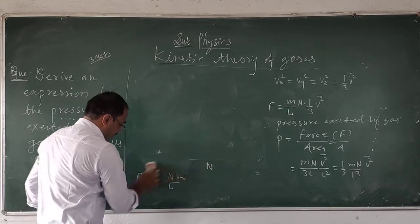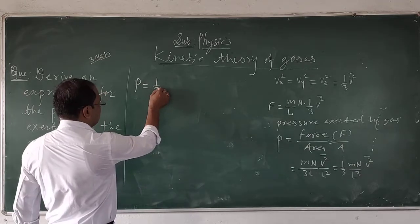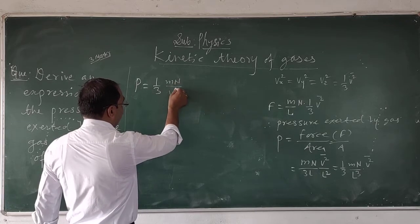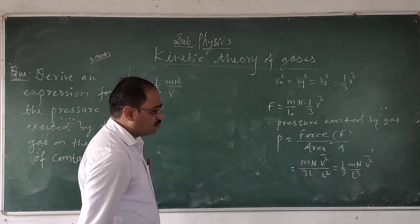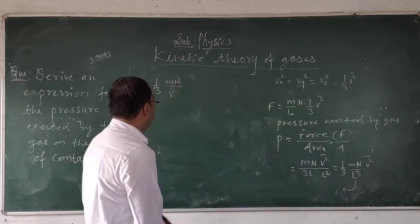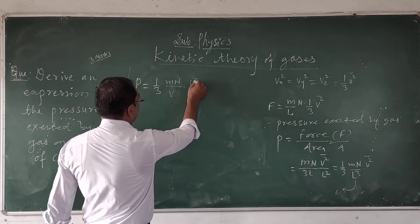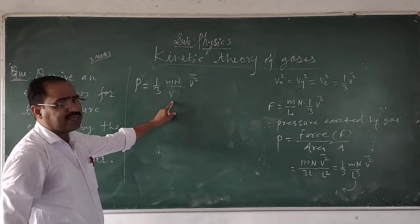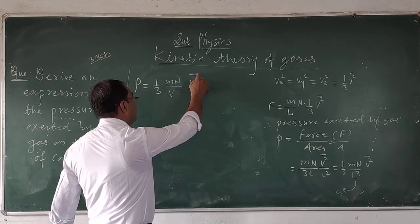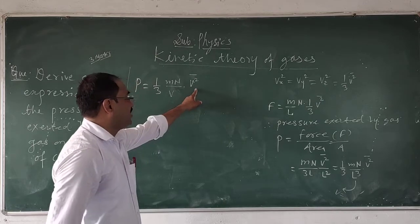Therefore the pressure is given by: P is equal to — since L equals V and L cubed equals V — the expression becomes one-third times M over V into V squared mean. This V squared mean is the mean square velocity, and V squared here is distinct from the volume V. There is a difference between the volume value V and V squared mean.